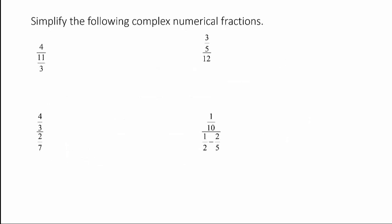Let's simplify the following complex numerical fractions. In this first example, we have 4 divided by (11/3). If we think about that as 4/1 divided by 11/3, then that's really 4 times 3 over 11, or (4/1) × (3/11), which is 12/11. By the way, if you get an improper fraction like that, just leave it as an improper fraction — don't change anything to mixed numbers in algebra unless we're working with an application problem.